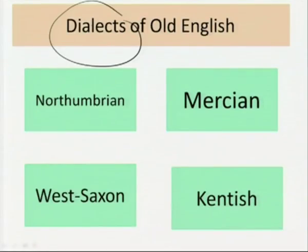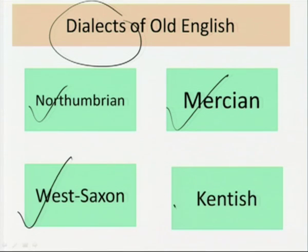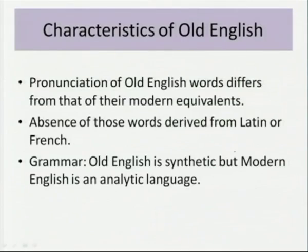There were four dialects of Old English: the Northumbrian dialect, the Mercian dialect, the Kentish dialect, and the West Saxon dialect. These were the four variants of Old English prevalent during the time.